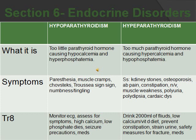Treatment for hypoparathyroidism: monitor the EKG, give a high calcium and low phosphorus diet, put them on seizure precautions, and give medications like IV calcium gluconate. For hyperparathyroidism: instruct them to drink 2,000 mL of fluid, follow a low calcium and vitamin D diet, prevent constipation, strain the urine, ensure safety measures for fractures, and give medications like calcitonin.